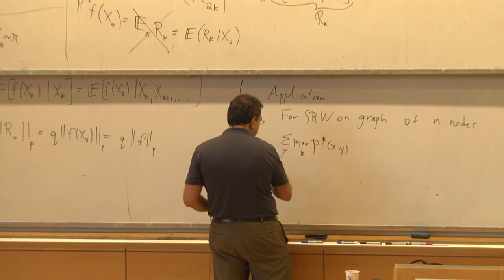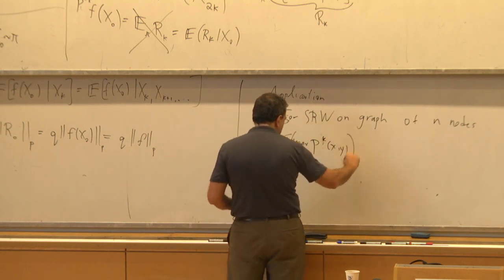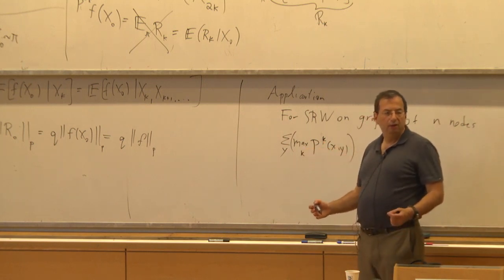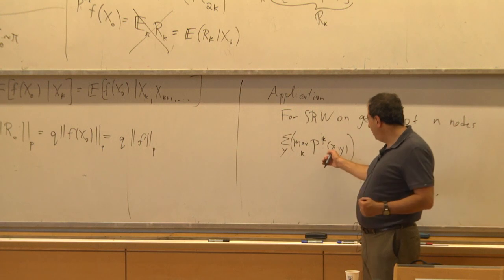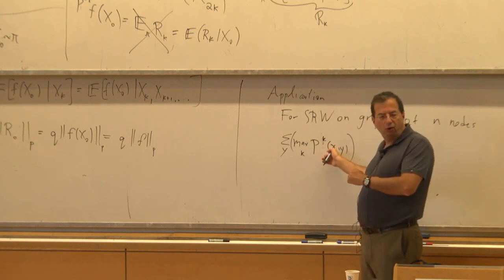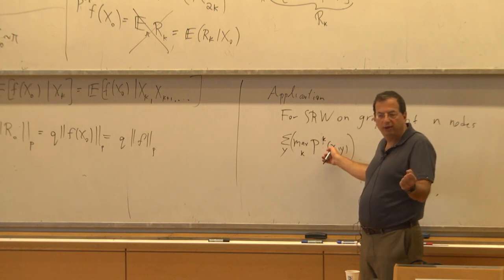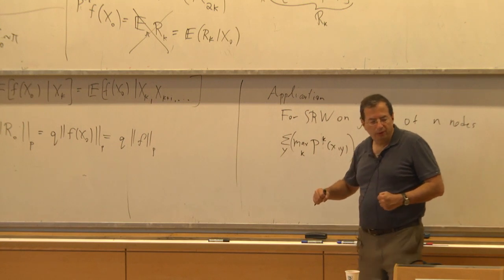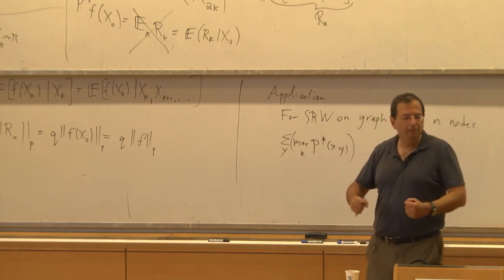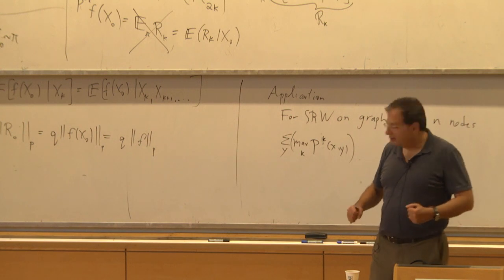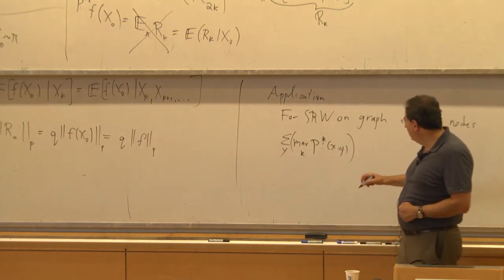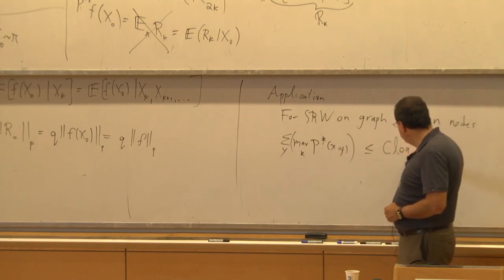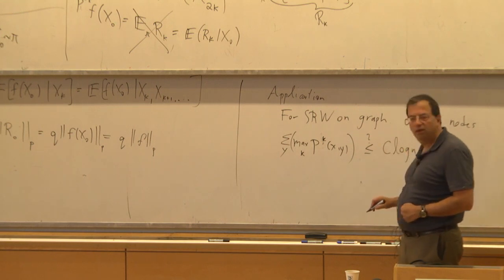We look at the sum over y of the max over k of p_k(x,y). David Aldous conjectured that this is bounded by a universal constant times log n — a constant that doesn't depend on the graph. The extreme case is a cycle or a path.